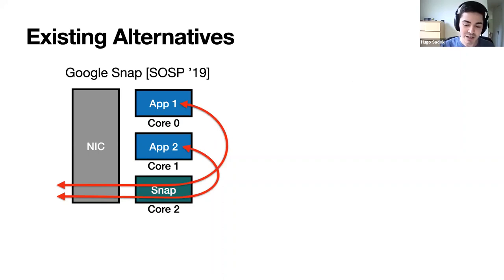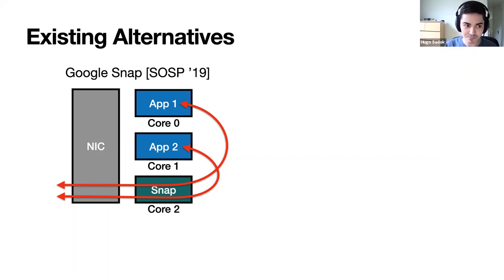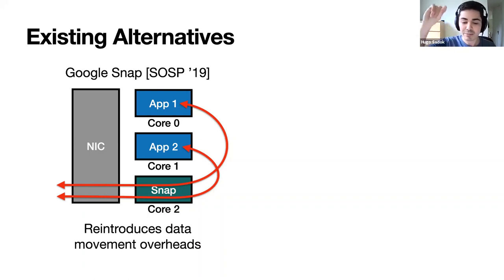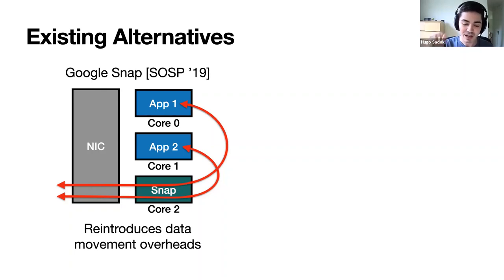There are existing alternatives that look to fix some of these problems — basically to reintroduce interposition to kernel bypass. The problem is that they either cannot fully replicate kernel functionality or they need to compromise performance to do so. For example, Google has a system called Snap that basically runs a network stack in a different process on a different core. It forces all traffic from all applications to go through this separate process. And because it runs with different privileges, it is able to reintroduce the kernel policies lost with kernel bypass. The problem is that it also reintroduces data movement overhead, because data has to hop between these different cores.